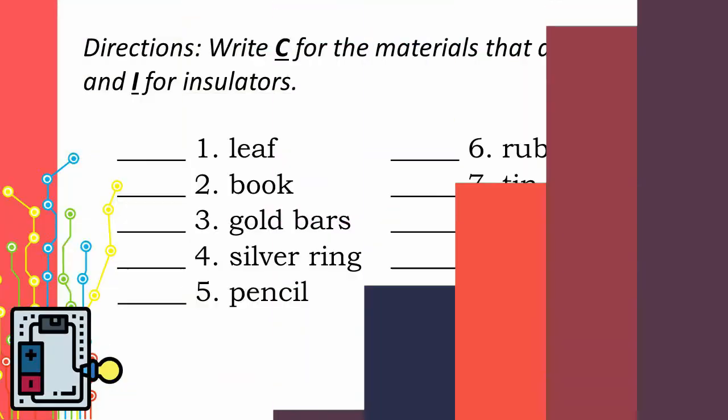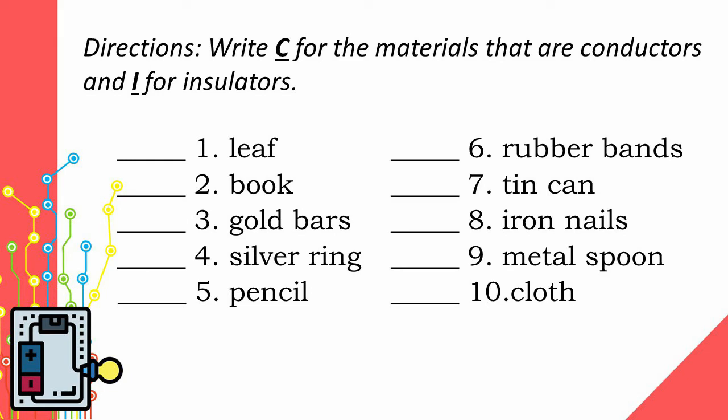Let's look back at our past lesson by doing this simple activity. Write C for the materials that are conductors and I for insulators. Number 1: Lift. Number 2: Book. Number 3: Gold bar. Number 4: Silver ring.